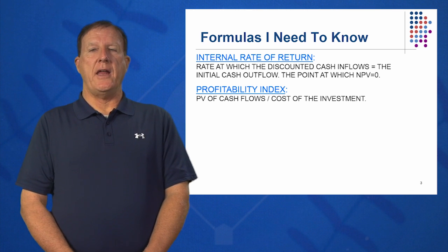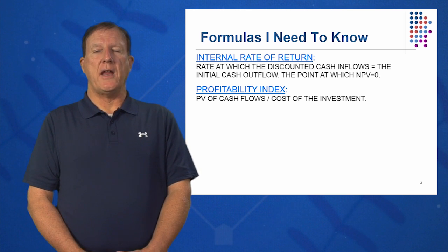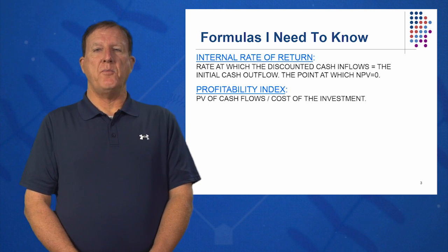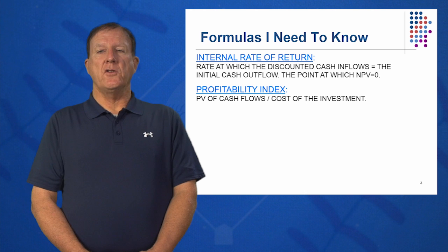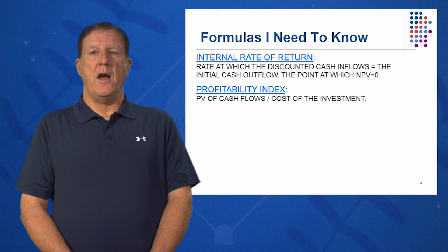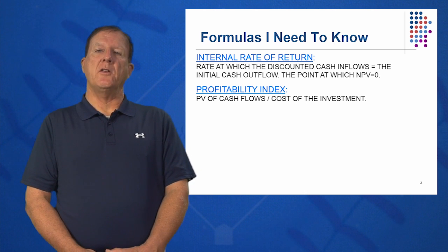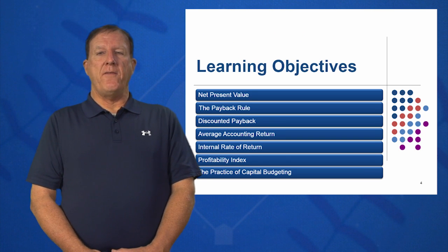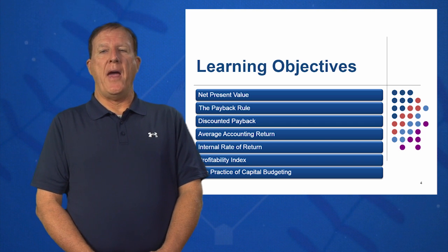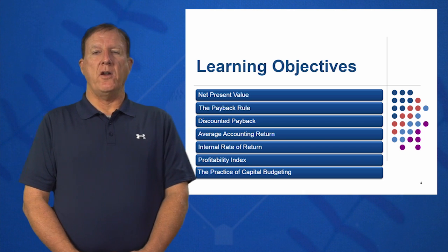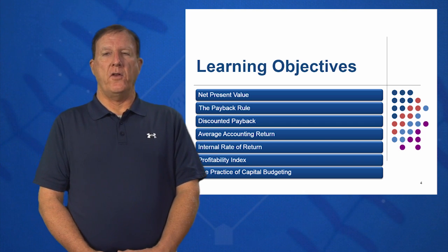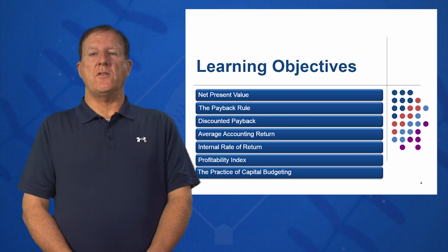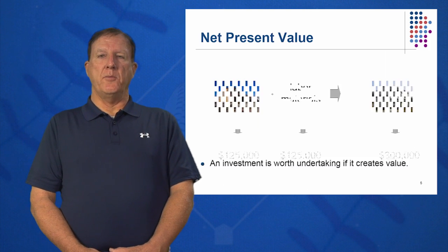Finally, our sixth method: profitability index, heavily used in government and nonprofits. It's the present value of the cash inflows divided by the cost of the investment — very popular in nonprofit organizations and in the government. So these are our six learning objectives: NPV, payback, discounted payback, AAR, internal rate of return, and profitability index. We'll go over all of those in detail, and then we'll look at which of these six methods is most popular in the practice of capital budgeting — our seventh and final learning objective.